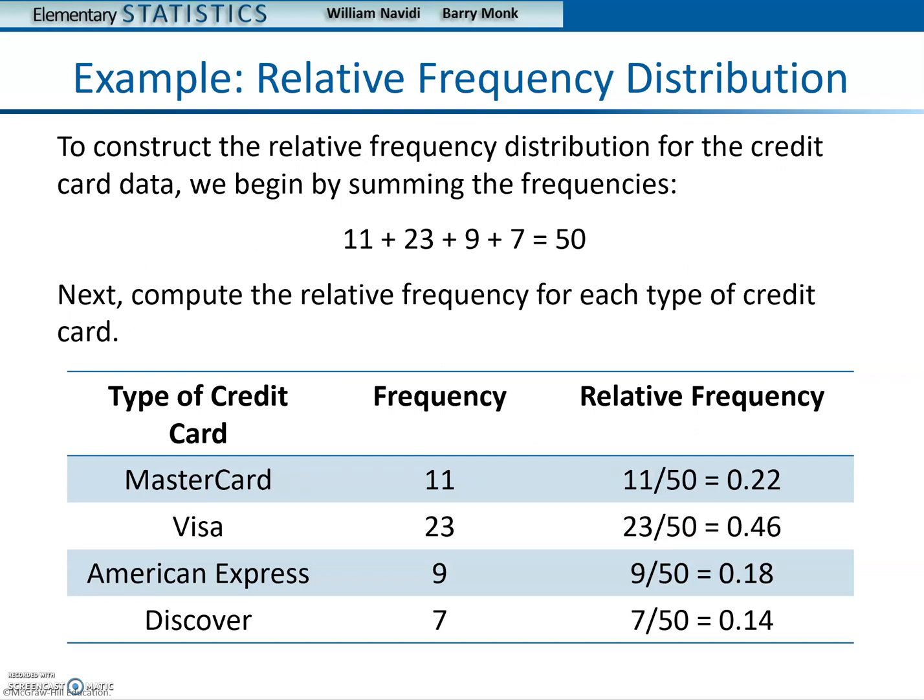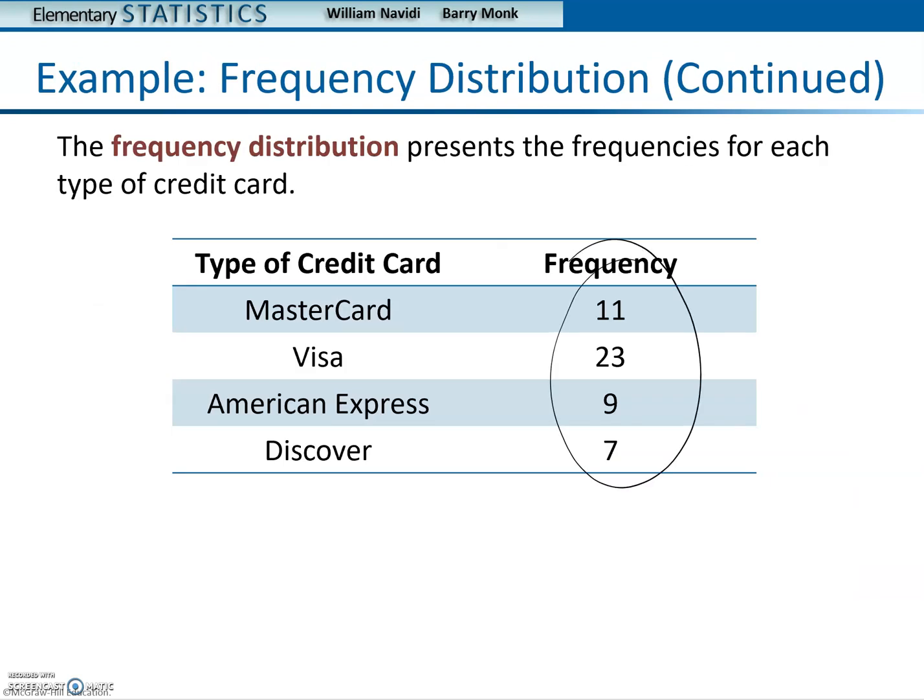They take the total, which is 50. So they add them all up: 11, 23, 9, and 7. And those numbers again come from here. That's the total.